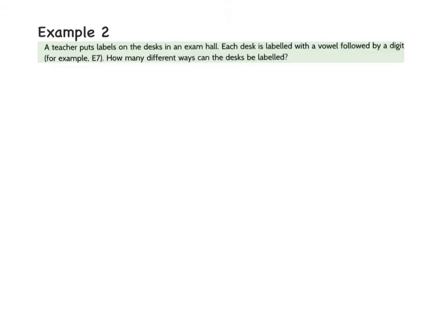Example two. A teacher puts labels on desks in an exam hall. Each desk is labeled with a vowel followed by a digit, example E7. How many different ways can the desks be labeled? So I have two events here. The first event is the vowels, and the second event is the digits. What are my options for the first event?